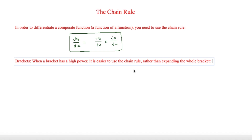This is Simon Stark and in this video we are looking at the chain rule. In order to differentiate a composite function — that is a function of a function — you need to use the chain rule. This is done by dy over dx equals dy over du times du over dx. This will make more sense when we start looking at a few questions.